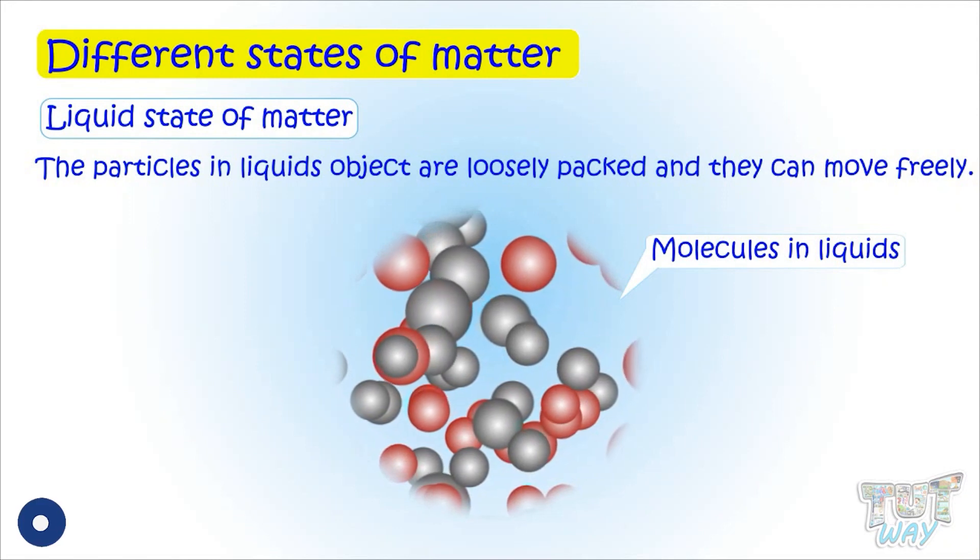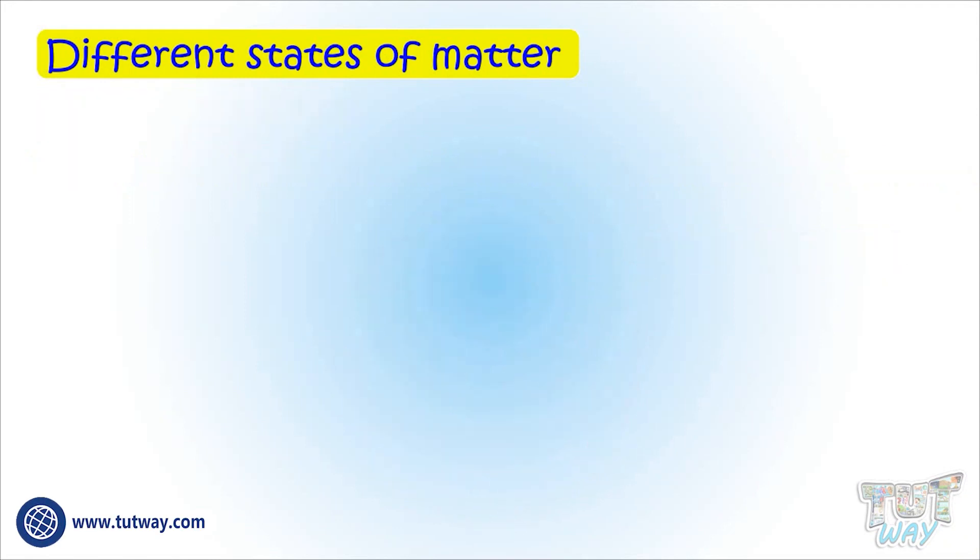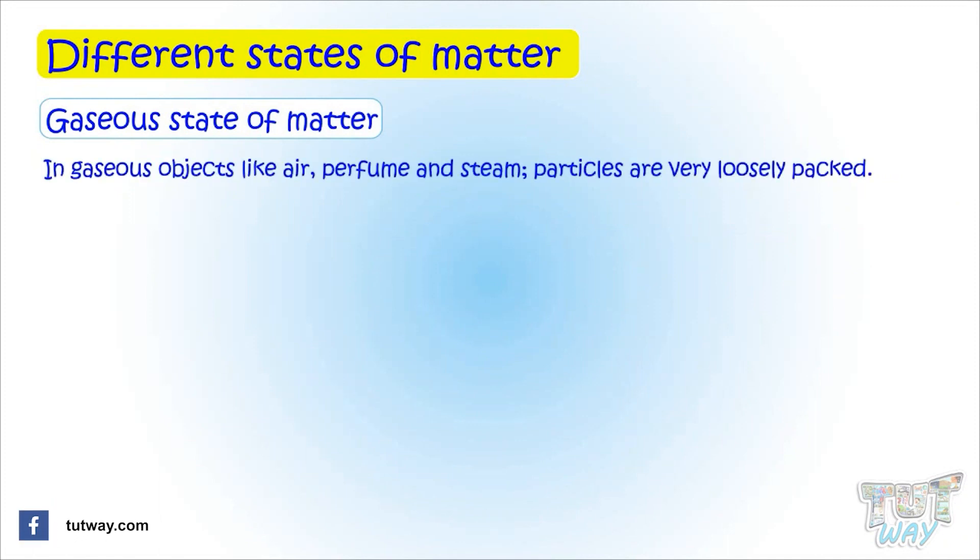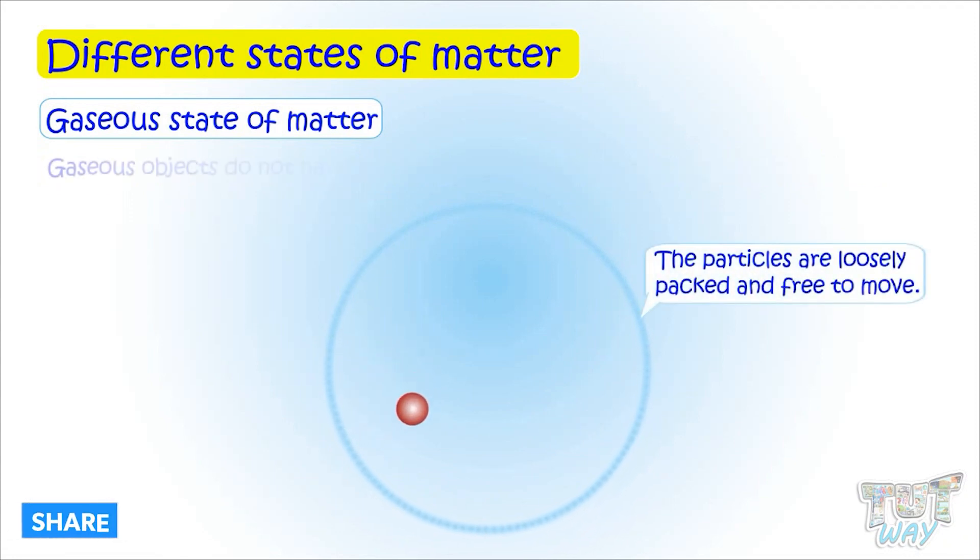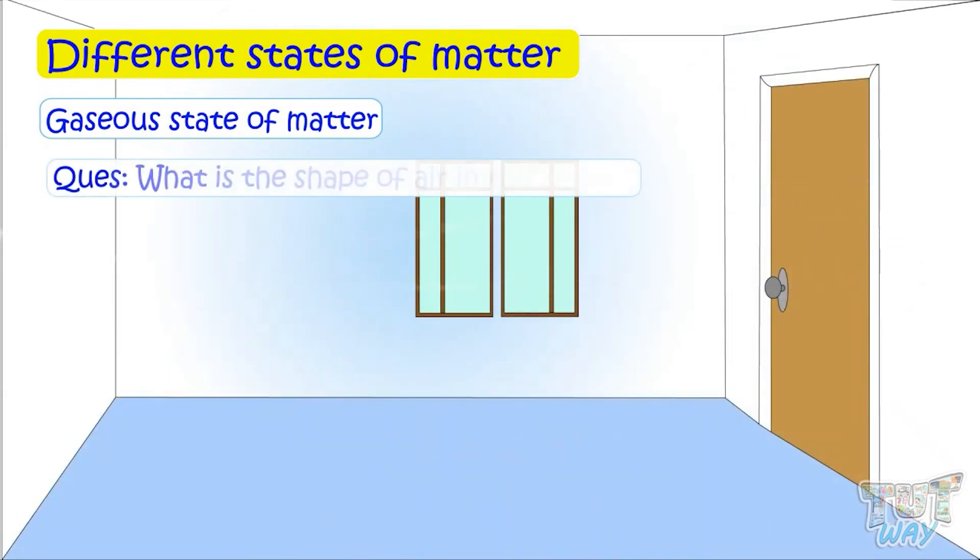Now, the third form of matter is the gaseous state. In gaseous objects like air, perfumes, and steam, particles are very, very loosely packed—even much more loose than liquids—and can move very freely. That is why gaseous objects do not have any shape; they take the shape of their container.